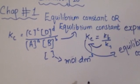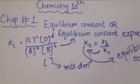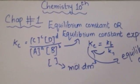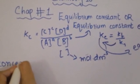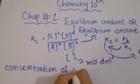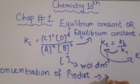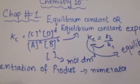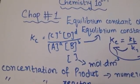In the equilibrium constant expression, we write the concentration of the products in the numerator, and we write the concentration of the reactants in the denominator. Always remember this rule.